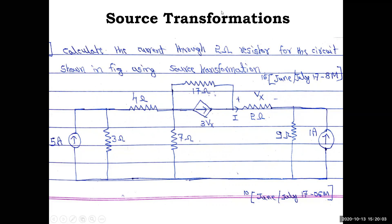We need to find current i through the 2 ohm resistor. There is also a 9 ohm resistor and a 1 amp source. The dependent source is new but we treat it like other sources. The controlling variable vx is the voltage across the 2 ohm resistor. By Ohm's law, vx = i × 2, so vx = 2i. We can substitute this value for vx later.